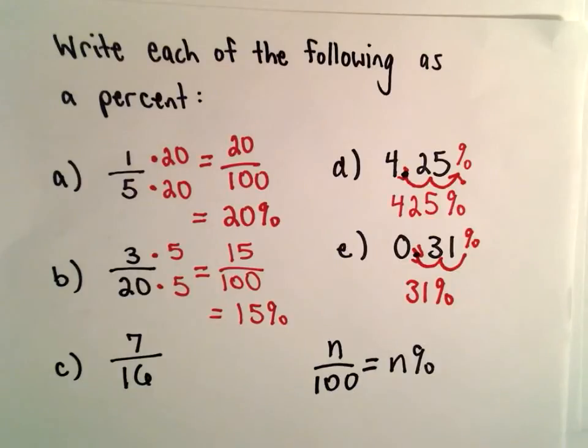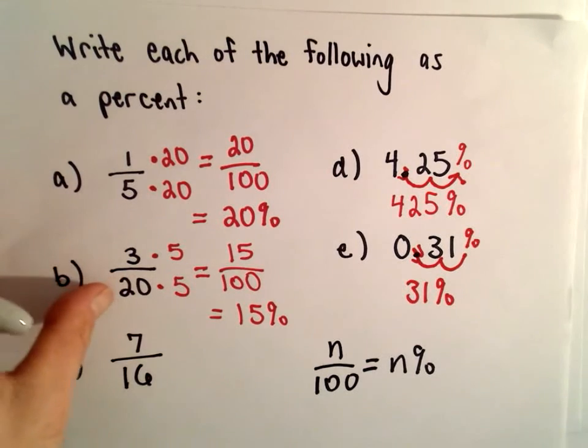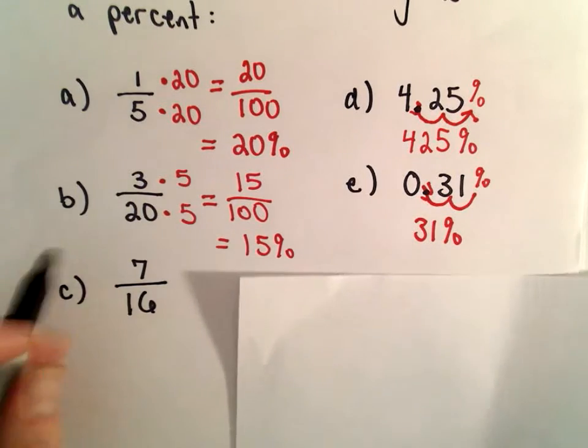Okay, so last but not least, let's look at part C here. I don't see a nice whole number that I could multiply 16 by in order to get 100 in the denominator. So the way of approaching A and B, I'm not going to do that on C.